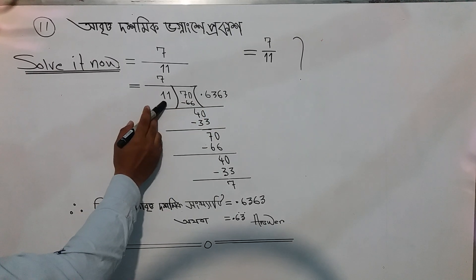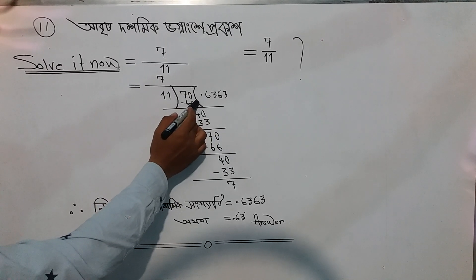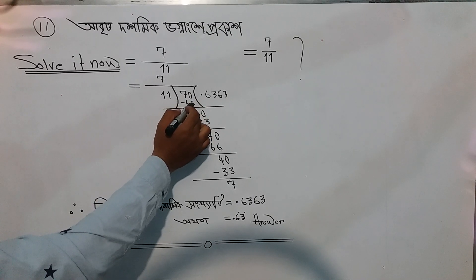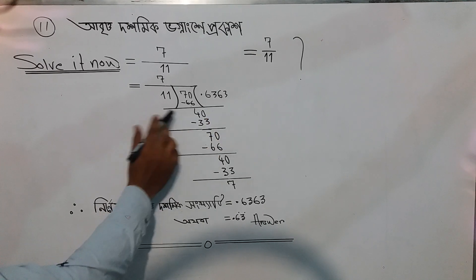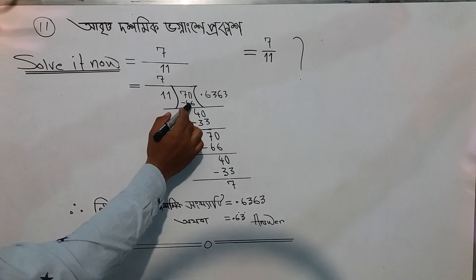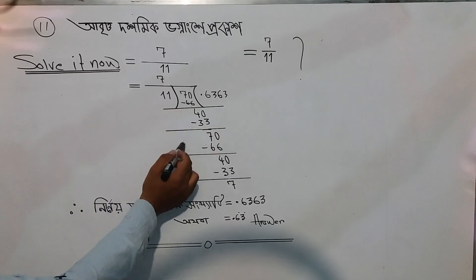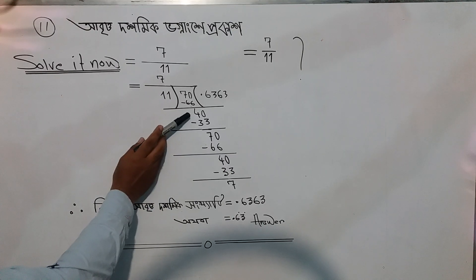Six times eleven, that means sixty-six. From seventy, we subtract sixty-six, then we will get four. After the decimal, we can add zero. Then we have forty.